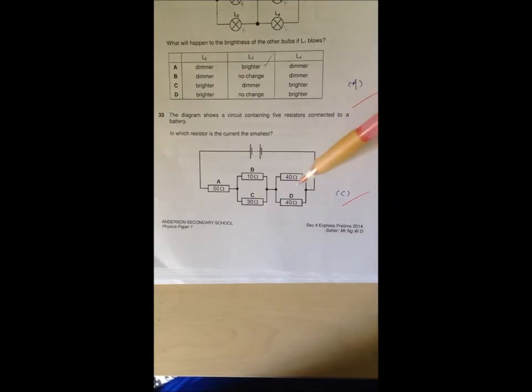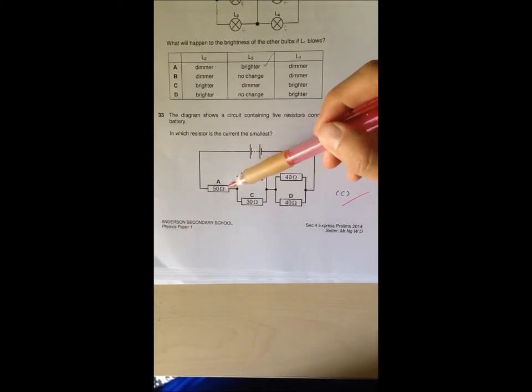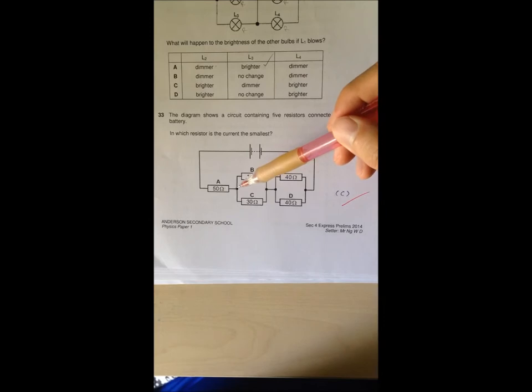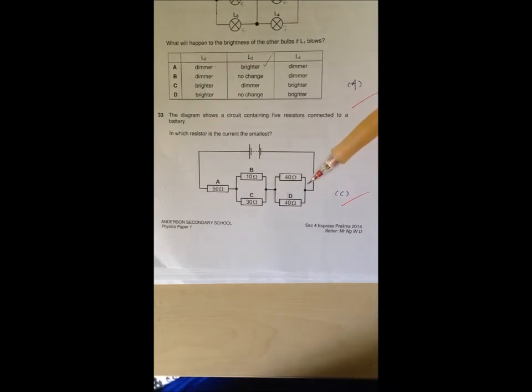So definitely this one will be a smaller current. Why? Because if you look here, let's say the current going through here is 10 ampere. When you go to here it's going to split, most of the current will come here, then after they join back into 10 ampere, then it comes to this junction both having same resistance so it's going to divide into equal parts. So definitely because it's divided into equal parts, current in D will be larger than the current in C. That's why C is the smallest current.